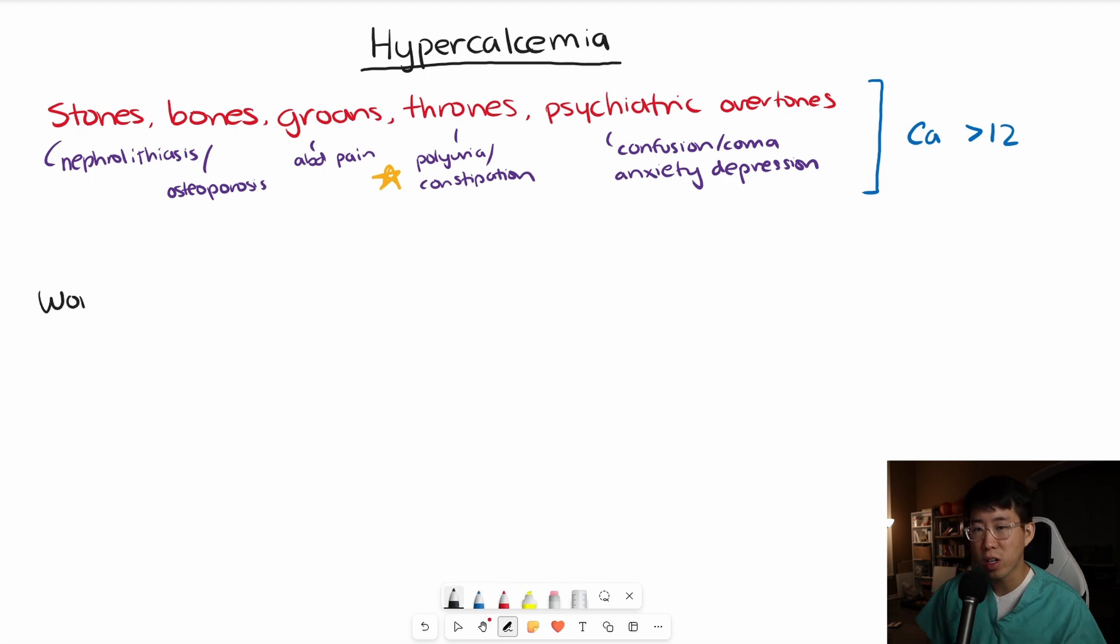Now, let's talk about the workup of hypercalcemia and how you can identify the etiology. The most common diagnoses are number one, primary hyperparathyroidism. Two, hypercalcemia of malignancy. And three, milk alkali syndrome.